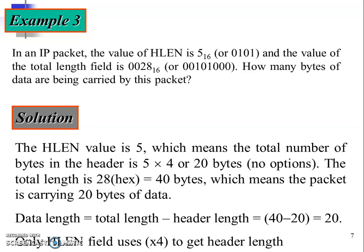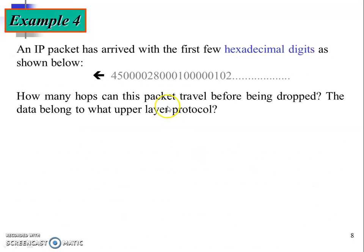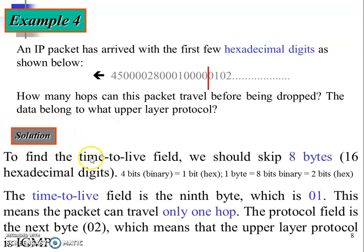Example four: an IP packet has arrived with the first few hexadecimal digits as shown below. They are asking: how many hops can this packet travel before being dropped? And which upper-layer protocol does the data belong to? Our focus here is entirely on the TTL field and the protocol field.